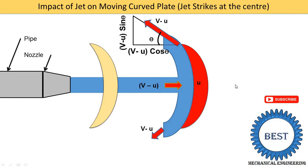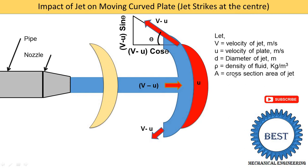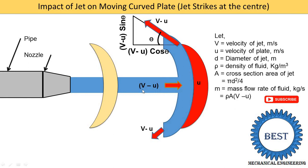Let me define the different parameters: v is the velocity of the jet, u is the velocity of the plate in meters per second, d is the diameter of the jet from which we find the area, rho is the density of the fluid, area is found as pi by 4 times d squared, and m is the mass flow rate of the fluid in kg per second. So m is equal to rho times A times (v minus u), because we are considering the relative velocity in a moving curved plate.